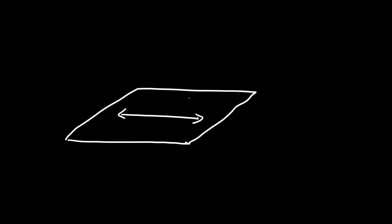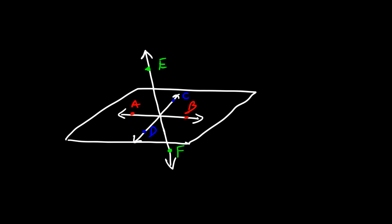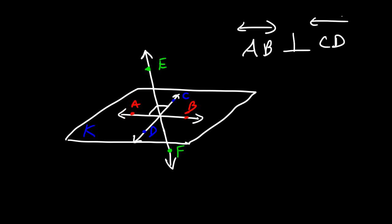Now we can draw a plane with a line here, another line, and another line — let's call them AB, CD, and EF. It's possible that AB can intersect CD at a right angle in the plane — let's call this plane K. So we could say that AB is perpendicular to CD. These are two intersecting lines, and it takes two intersecting lines to determine one plane.